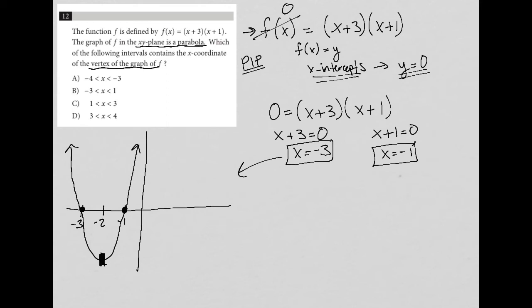I know that my x value for the vertex is at x = -2. So let's see which one of the answer choices has an interval that contains the value x = -2.